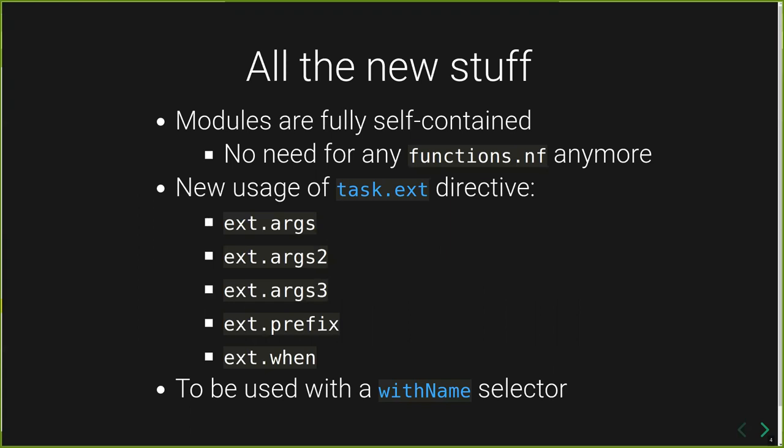So what is new in the new DSL2 syntax for modules? Basically, modules are now fully self-contained — we don't need any `function.nf` anymore, and we don't need to work with params whenever we call a module or sub-workflow. All the logic when calling a module or sub-workflow can be done using the new `task.ext` directives. We can set up different arguments, set up a prefix for the file name, and use a `when` directive to determine if a particular module should run or not. These `task.ext` directives are now used with `withName` selectors in the module config, so instead of using a huge `params` map, we just have `withName` selectors.